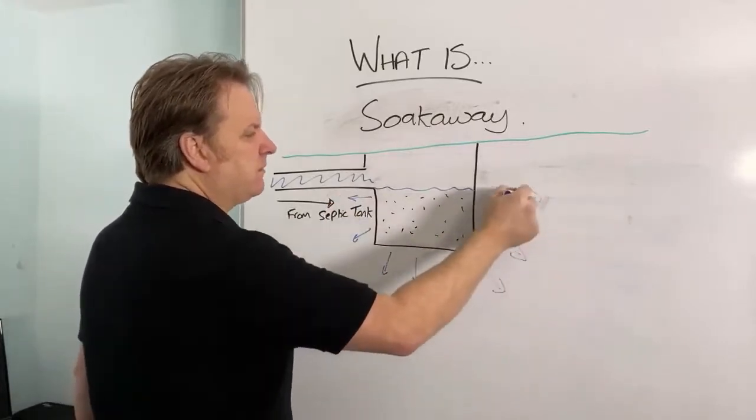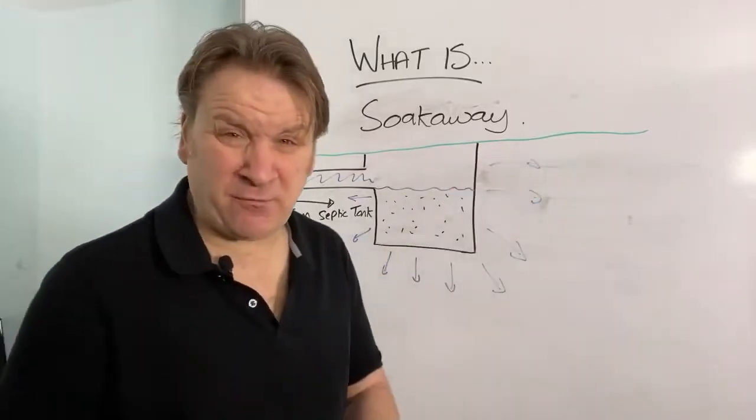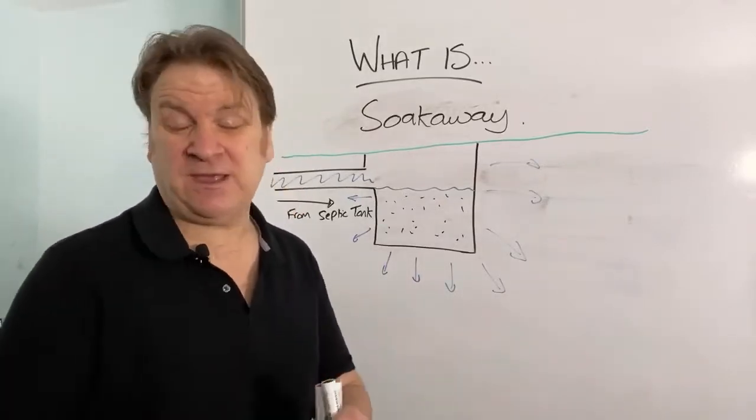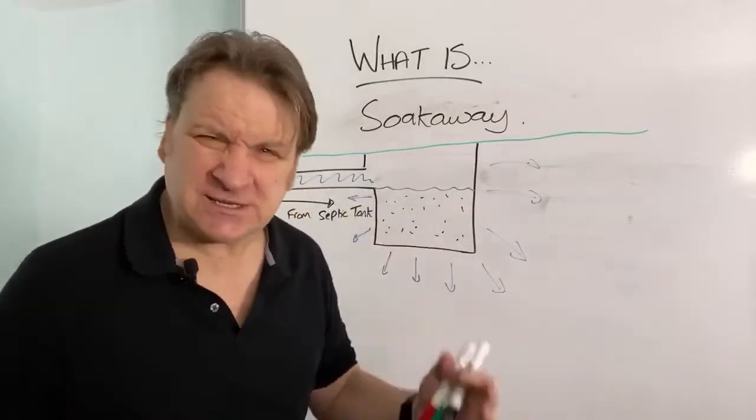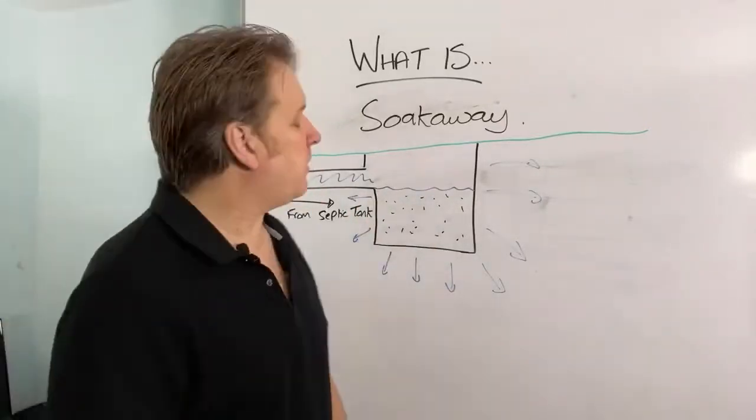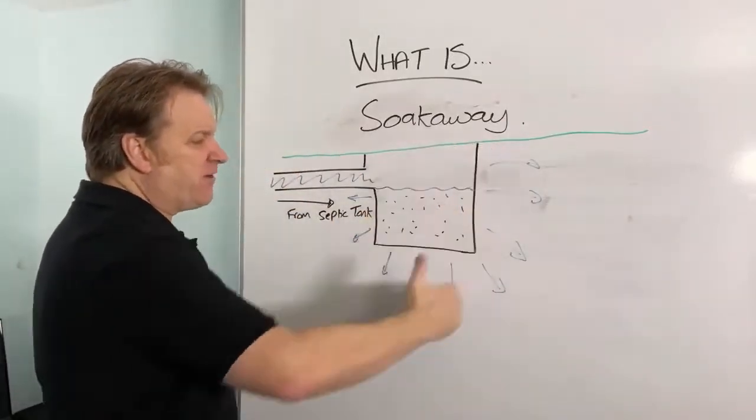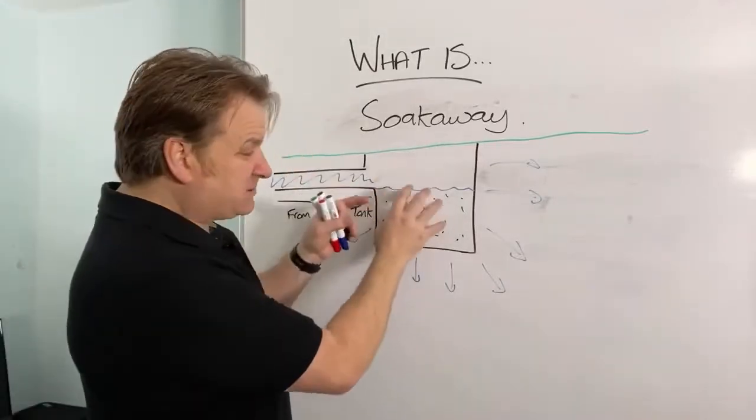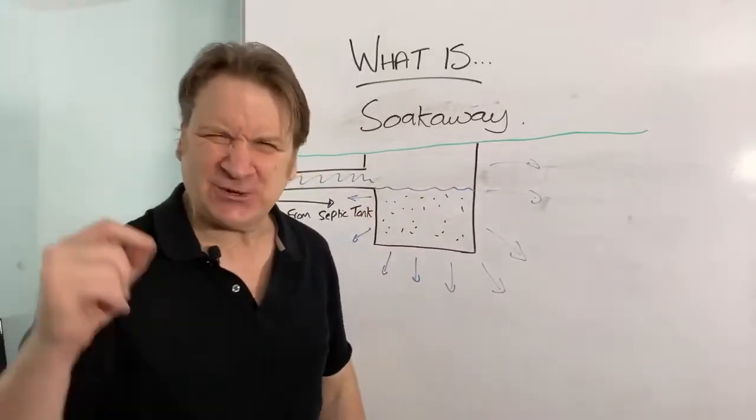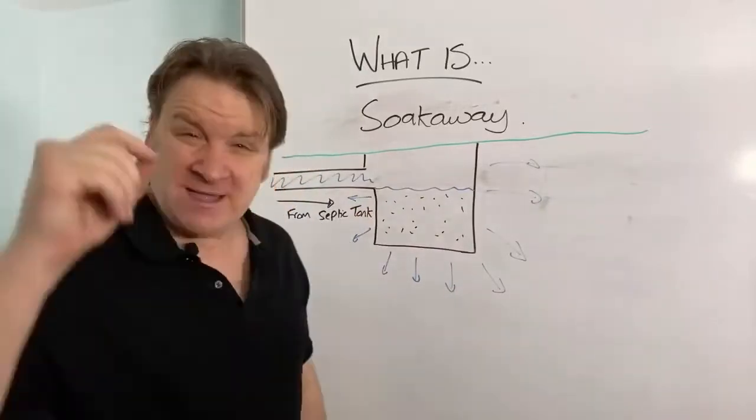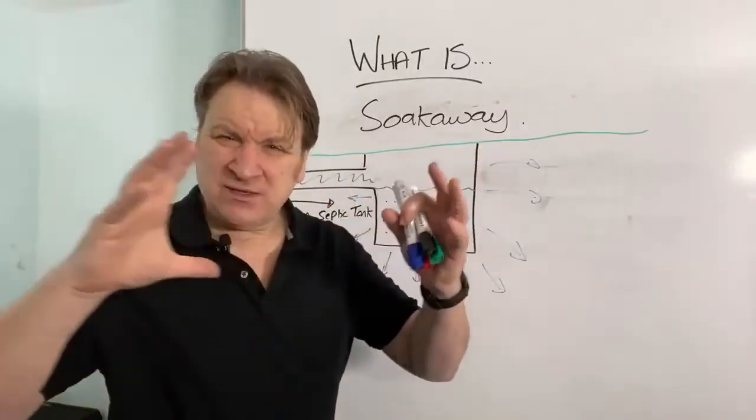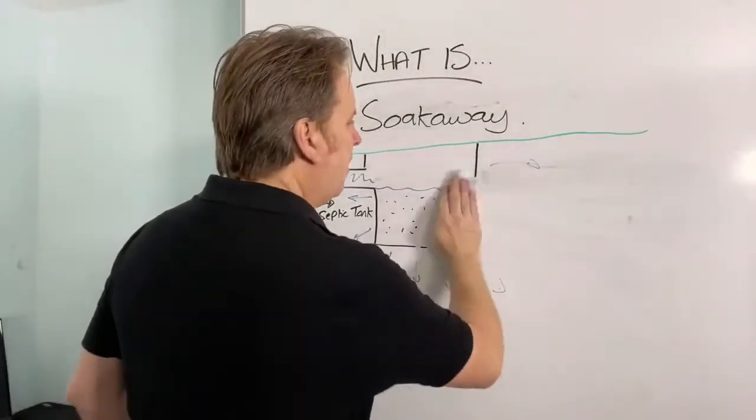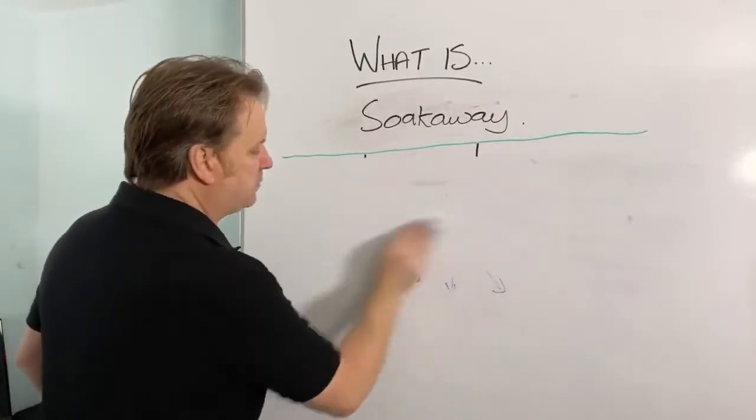Now, a soak away, the size of the soak away will depend on the number of people using the septic tank. So obviously the soak away is going to be smaller if you've got two people using it. If you've got ten people going into it, then obviously it's going to be a lot bigger. And also, the size of the soak away will depend on what the soil conditions are around it. So, for example, if you live on an area where there's chalk or sand, then the water's going to come straight in and soak straight away again. Sand and chalk are the best soak away mediums you can get. If it's surrounded by clay, then the soak away has to be a lot bigger.